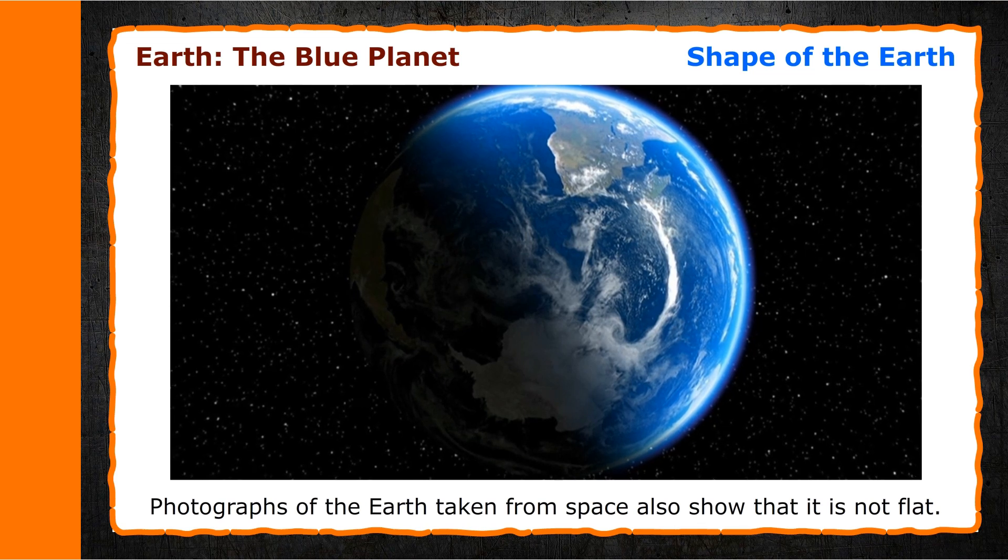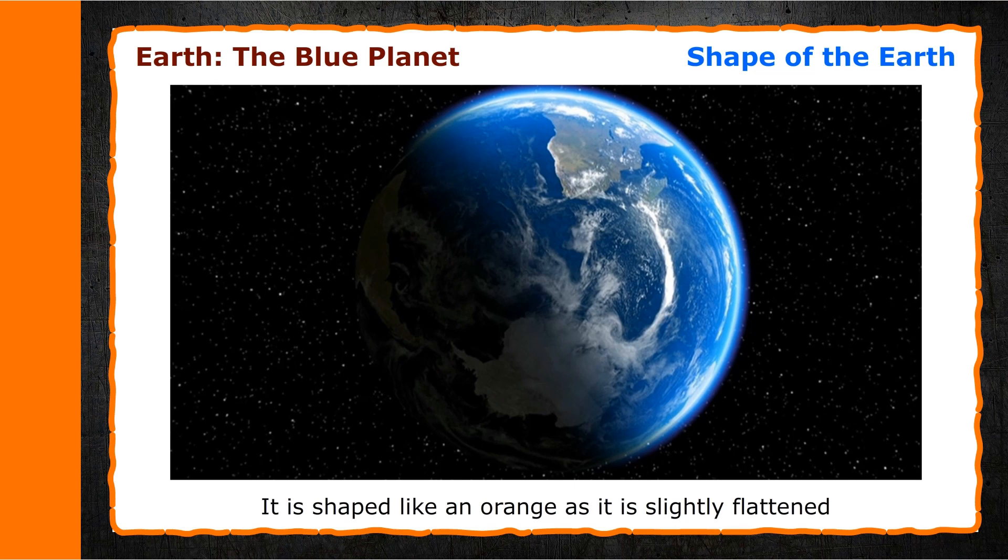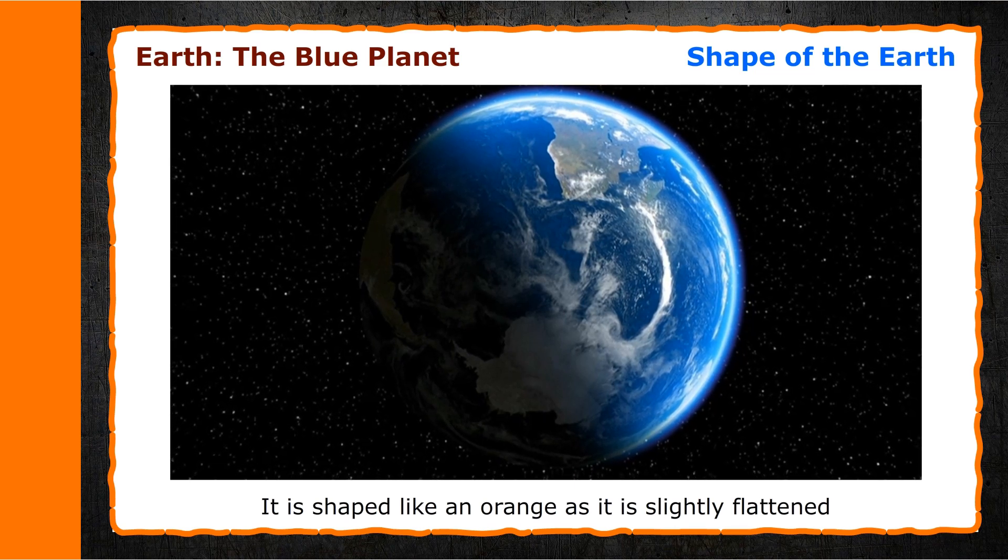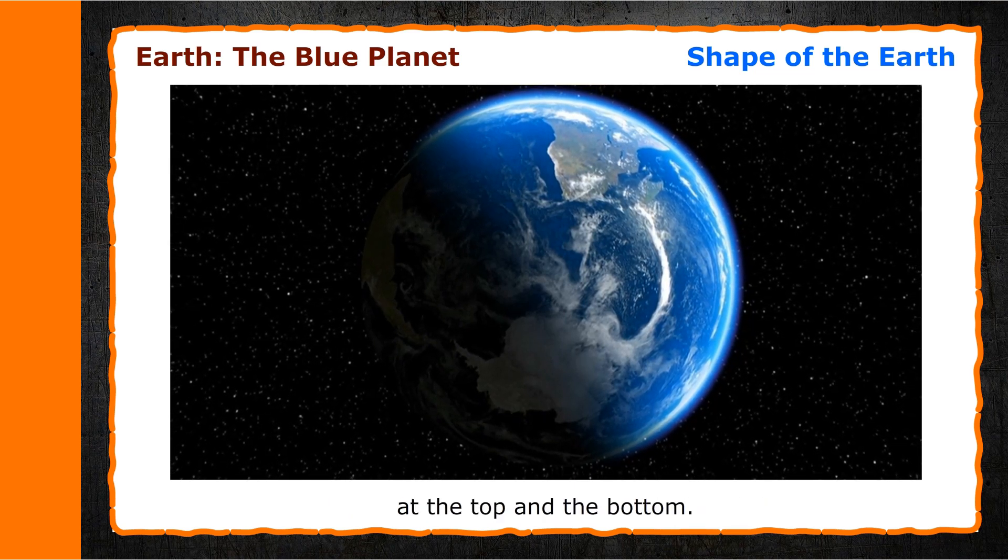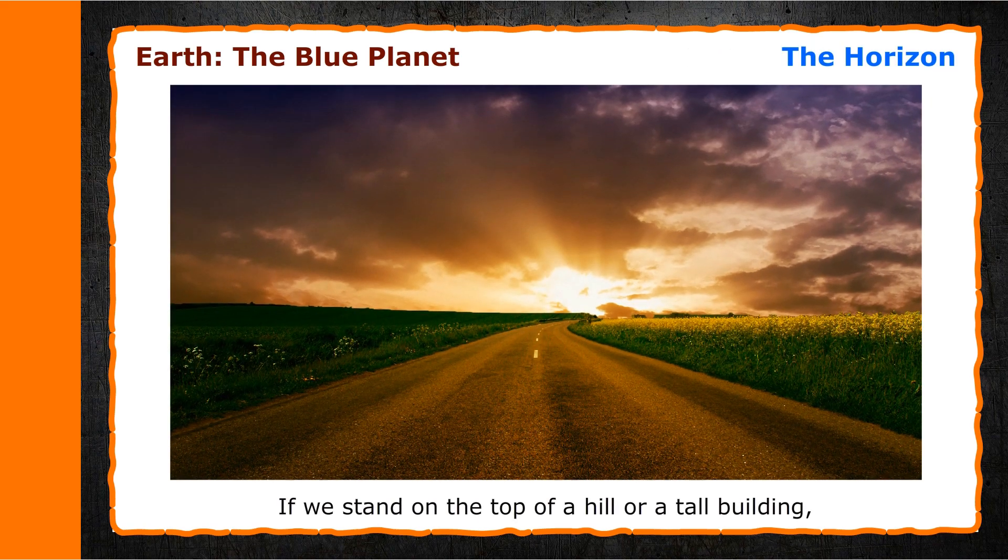Photographs of the Earth taken from space also show that it is not flat. Neither is it a perfect sphere. It is shaped like an orange as it is slightly flattened at the top and the bottom. The Horizon.